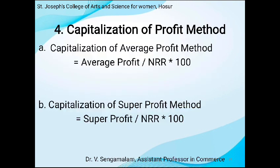Capitalization of profit method. The first is capitalization of average profit method: Average Profit ÷ NRR × 100. The second is capitalization of super profit method: Super Profit ÷ NRR × 100.